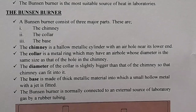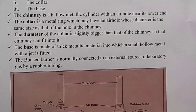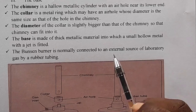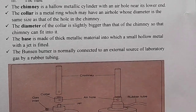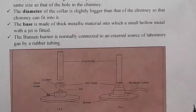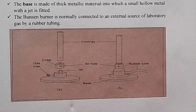The Bunsen burner is normally connected to an external source of laboratory gas by a rubber tube. This is how the Bunsen burner looks like.